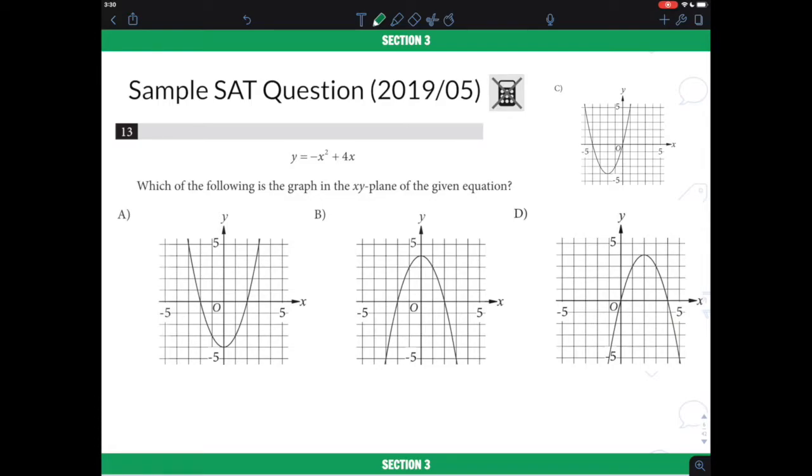Now, some basic knowledge about quadratic graphs is that you have to make sure that you pay attention to the a value right here. In this case, the a value here is negative 1. Now, this is huge because it tells you in what way the graph will open to. Is it opening up or is it opening down?